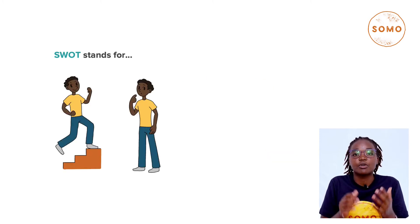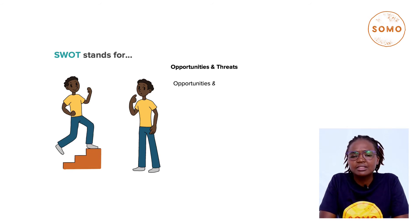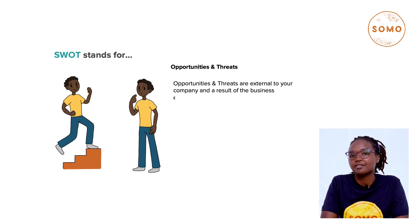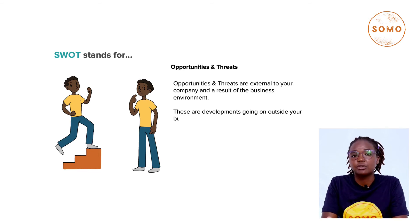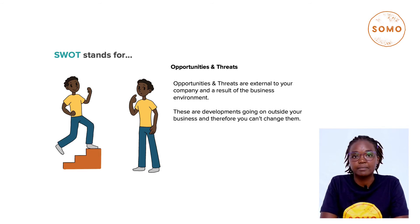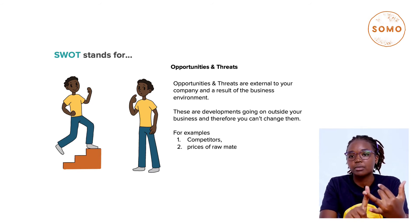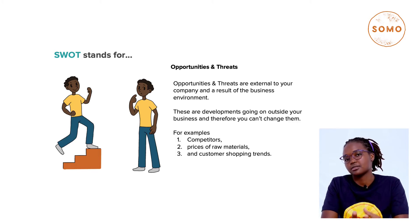O and T stands for Opportunities and Threats. Opportunities and threats are external to your company and are as a result of your business environment. These are the developments going on outside your business and therefore you can't change them. For example, your competitors, prices of raw materials, and customer shopping trends.